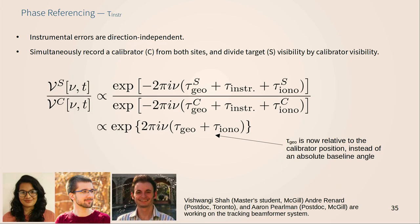For the instrumental errors, we use a process called phase referencing. This is the reason for the tracking beams on the pulsars — we have a calibrator source of precisely known position, and our FRB source which we're trying to identify. The instrumental errors are not dependent on the position of either source, so dividing them out cancels the instrumental terms, leaving just the geometric delay relative to the pulsar, and the ionospheric delay.